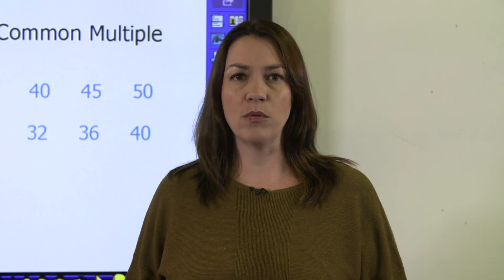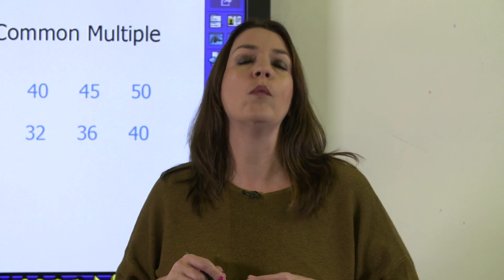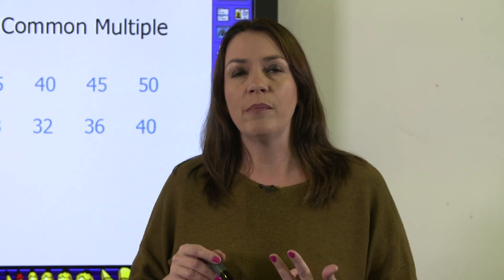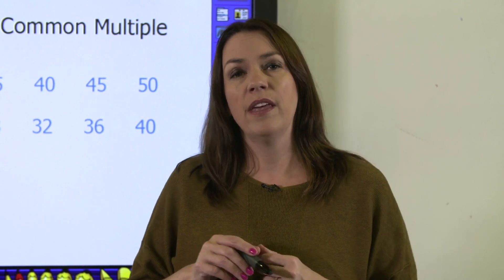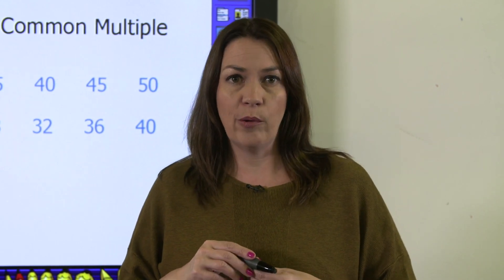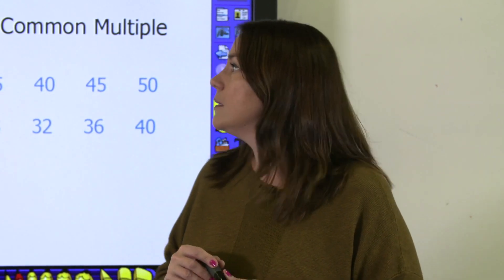Hi, I'm Rebecca, and in this film we're going to look at how to find the lowest common multiple. So let's start by defining what we mean by multiple. A multiple of a number is where you multiply two numbers together and get the answer. Basically, it's the numbers in a times table. So let's have a look at how this works.